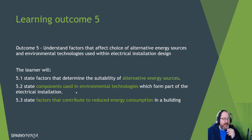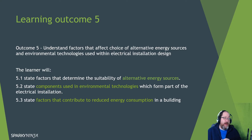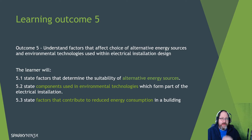The second area is to state the components used in environmental technologies which form part of the electrical installation. For example, if you're doing a PV system, what are the components? You'll have the panels forming an array, the inverter, and for CHP you'll need a generator somewhere. Just understand that utilizing these environmental technologies will require equipment, and that equipment has to go somewhere.